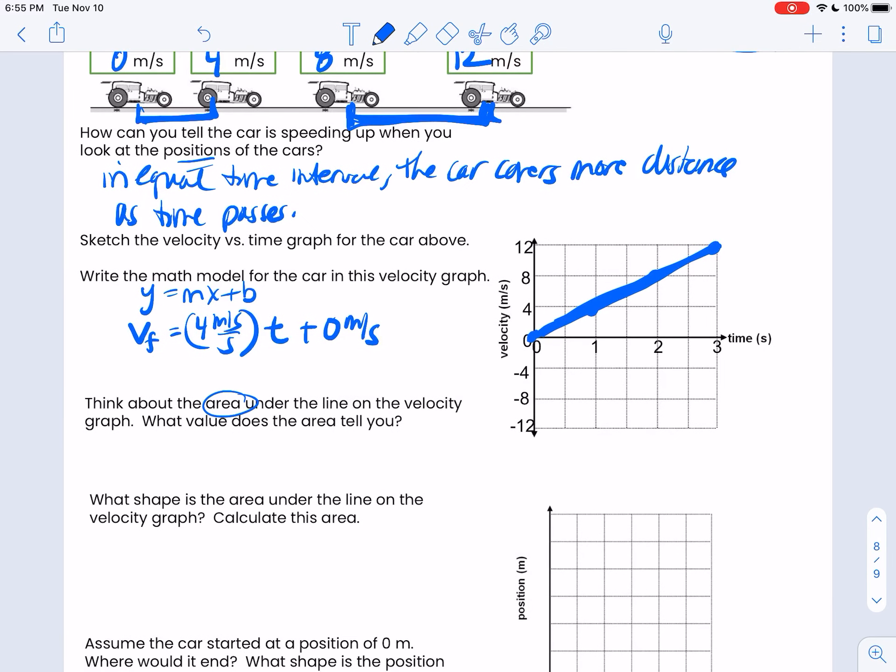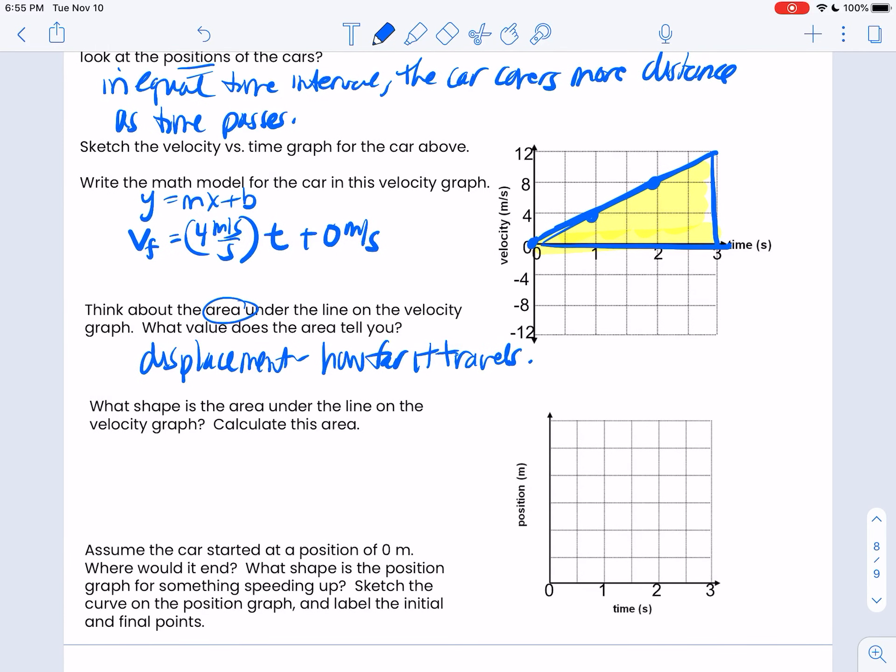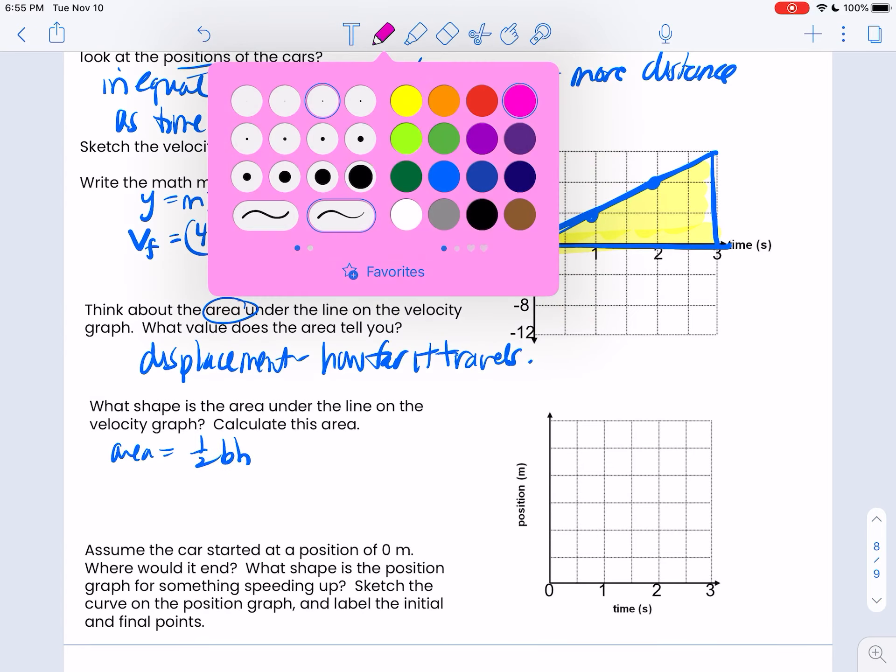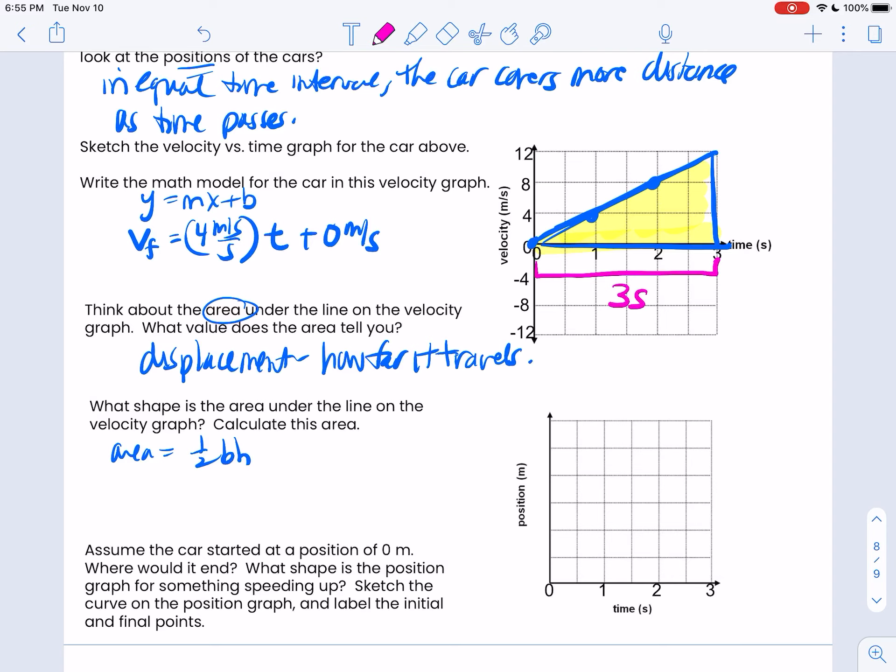Now, tricky one. Area under this graph. Think about when we did this before. This area here. Before, it was a line, and then we had a box like this. But it's not a box anymore. What shape is this now? This is a triangle. But that box still tells me the displacement, how far it travels. That has not changed. The shape is just different. So if the shape under the line is the displacement, this is a triangle, which is going to be one half base times height.